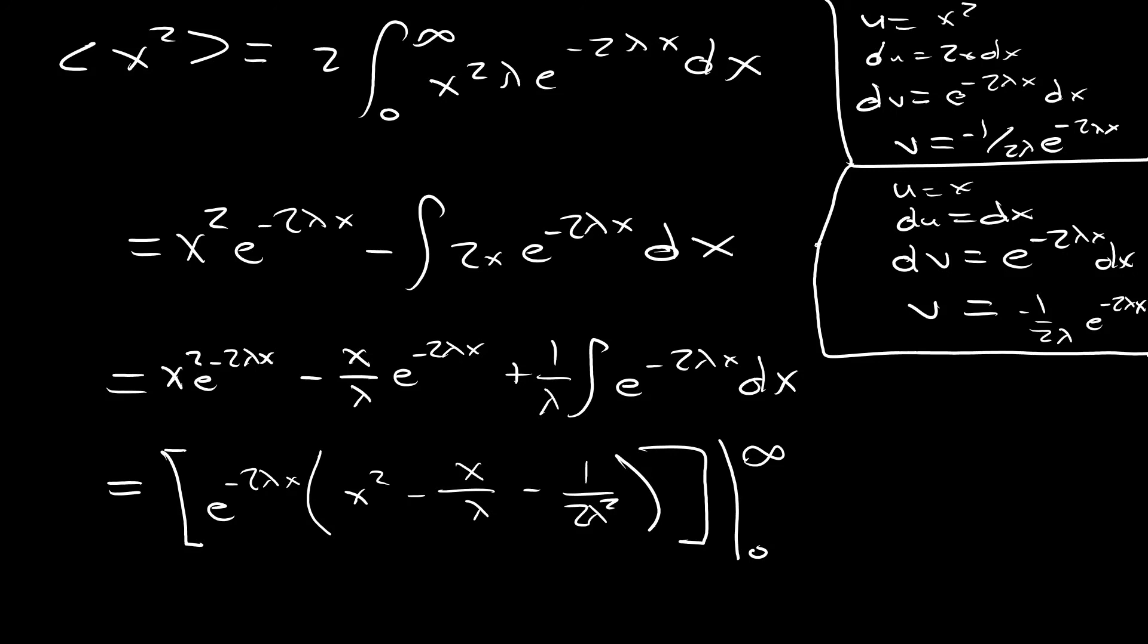All right, now again, remember this is all evaluated on bounds 0 to infinity. So now all we have to do is evaluate this. And it's pretty easy and straightforward to see that the only term we're going to end up getting is going to be this guy right here because our bounds are going to basically cancel everything else out. And so when we evaluate this on those given bounds, we're going to end up getting 0 minus a negative 1 on 2 lambda squared. And so this is just equal to 1 on 2 lambda squared for our expectation value of x squared.